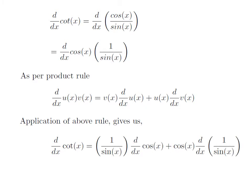Application of the product rule gives us: differentiation of cotangent of x with respect to x is equal to 1 divided by sine of x into differentiation of cosine of x with respect to x, plus cosine of x into differentiation of 1 divided by sine of x with respect to x.